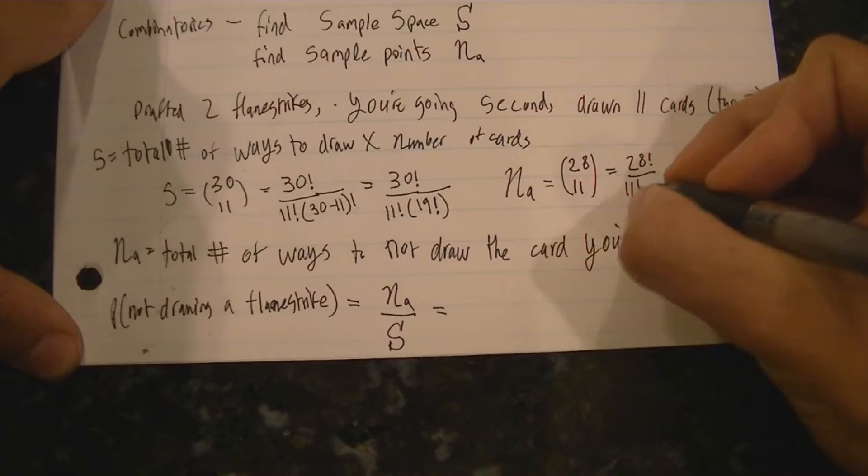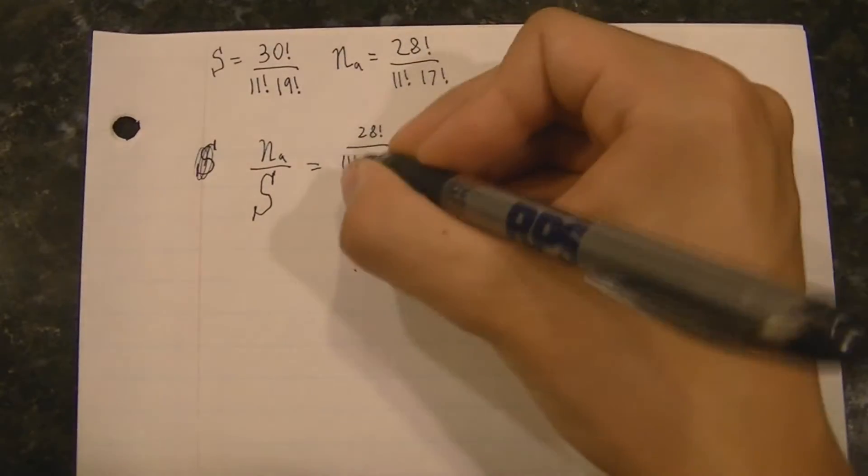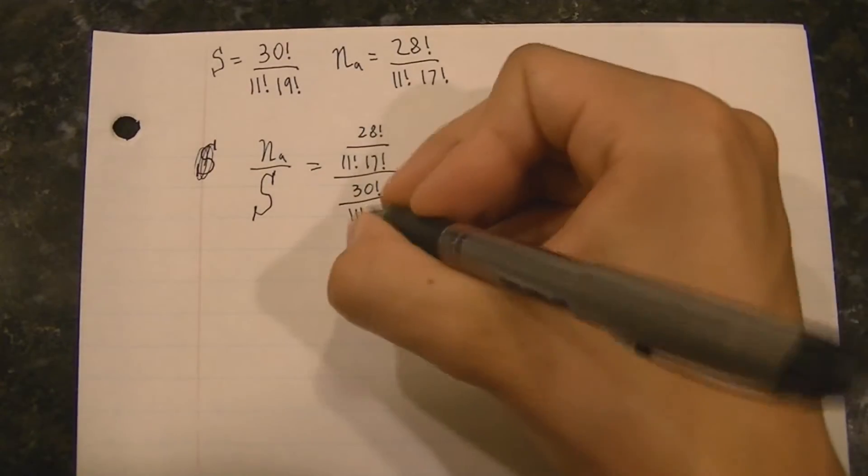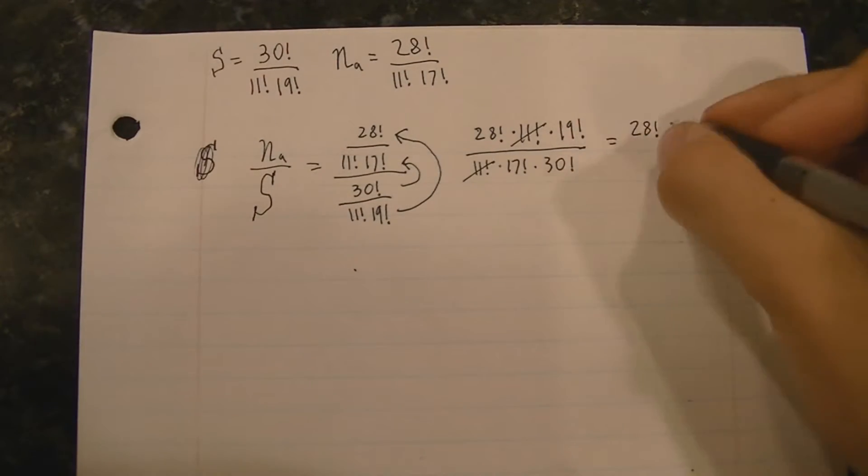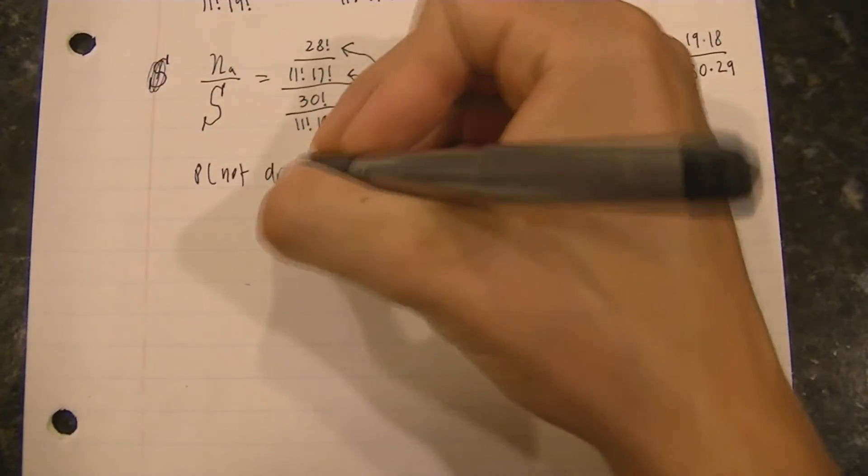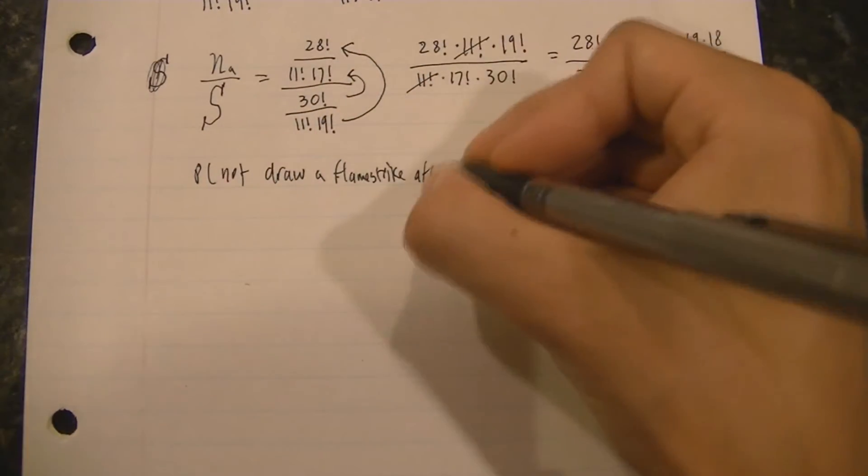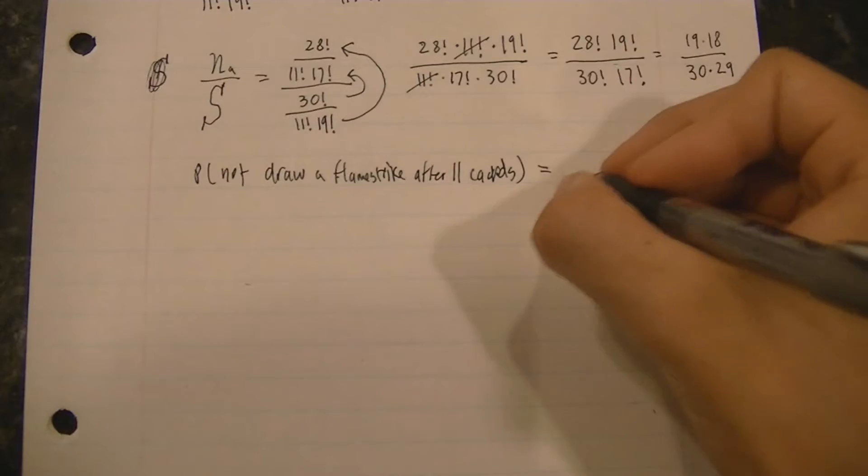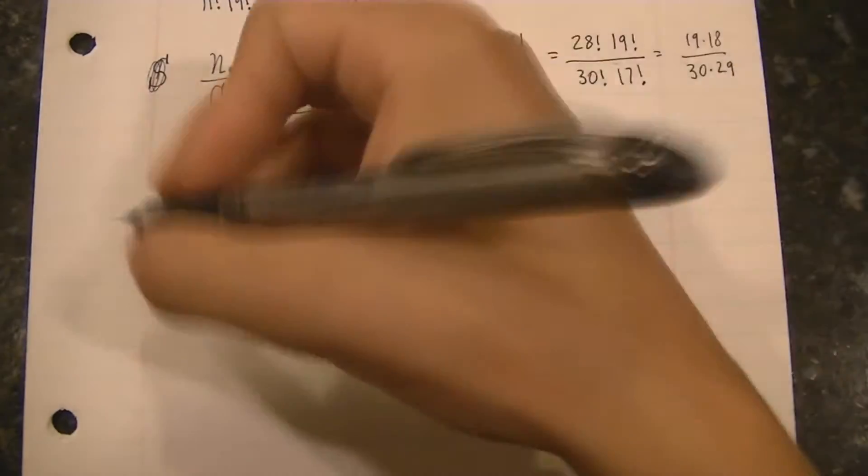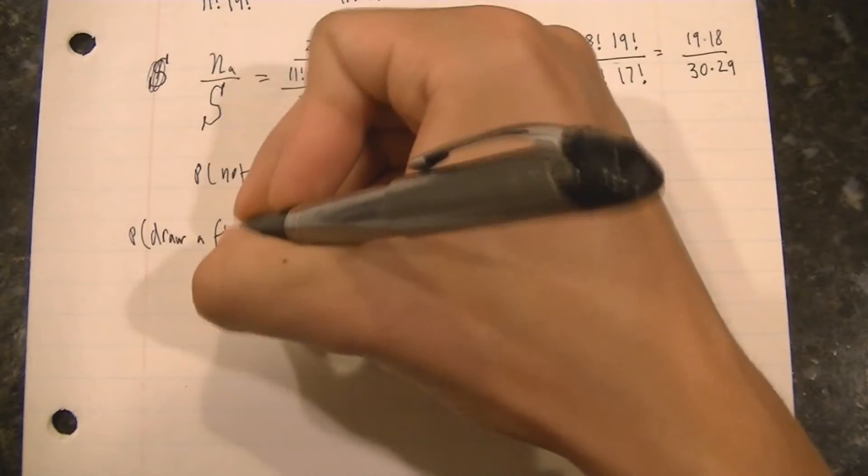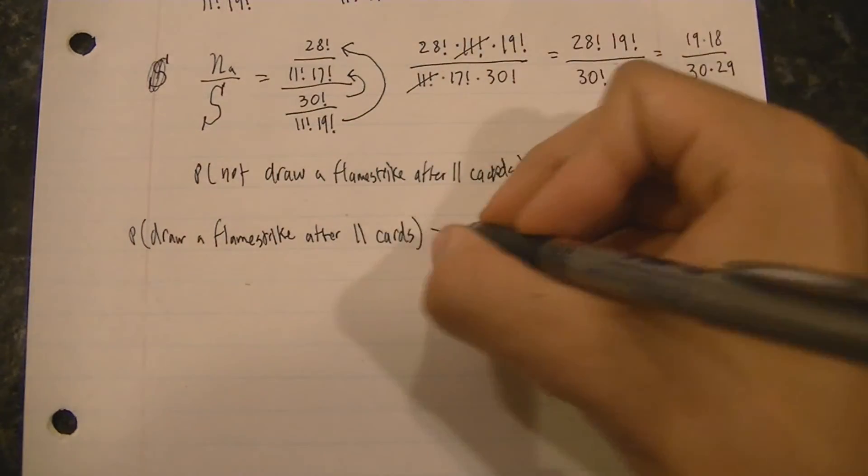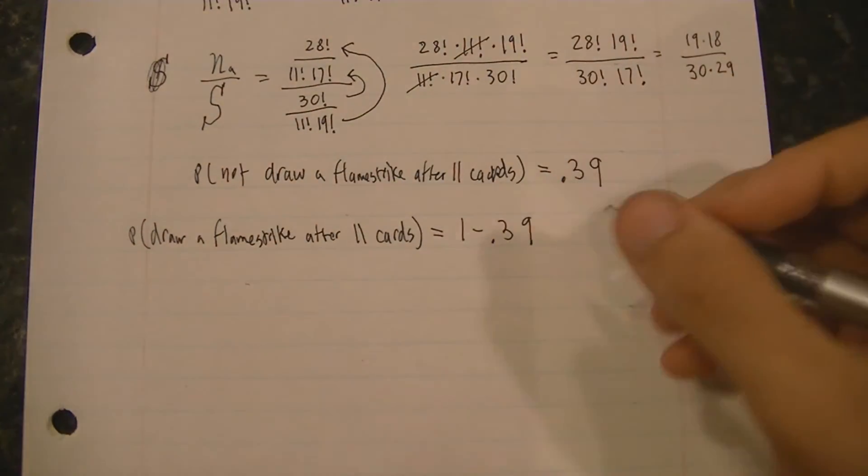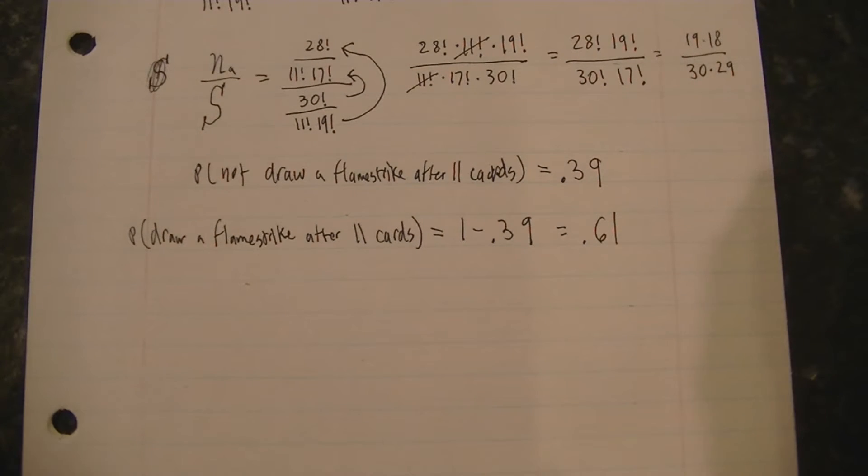And if you take the total number of ways you can draw 11 cards without drafting a single flamestrike and divide that by the total number of ways you could draw 11 cards, then you will be given the probability of not drawing a single flamestrike within those first 11 cards. And if you take 1 minus that probability, you'll find that you have a 0.61 probability to draw a flamestrike after 11 cards being drawn.